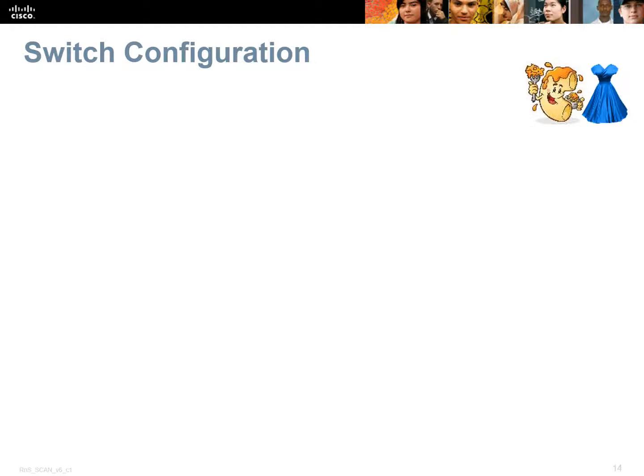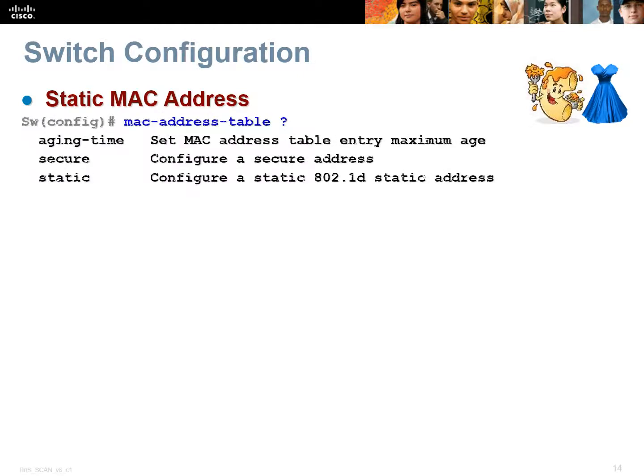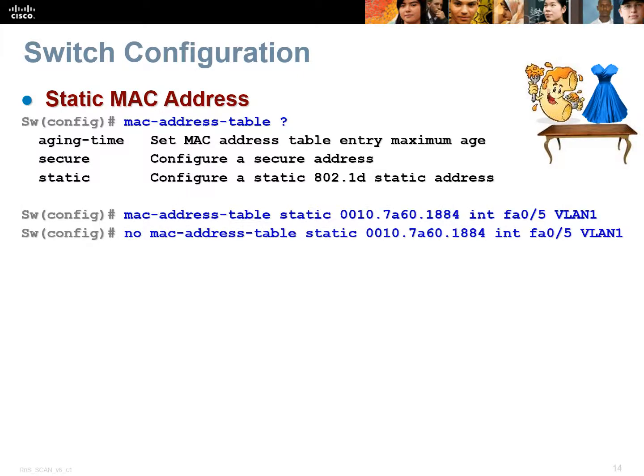Let's dive a little deeper into switch commands. For MAC addresses, you can configure the MAC address table with options like aging time — how long to remember a MAC address — secure, or static. You can configure an interface to say this MAC address is always going to be on this VLAN, so the switch doesn't have to learn anything. If anyone tries to move that PC or server to a different port, it's just not going to work, because the switch says this MAC address must be on this interface.